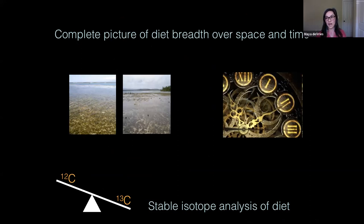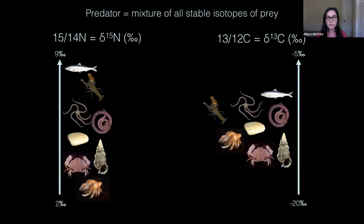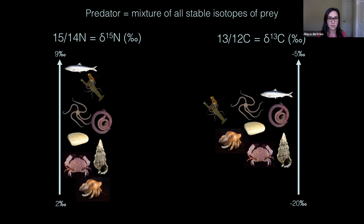Now we had an idea of what they're capable of eating in the lab. We wanted to know what they're eating in the field. To get a complete picture of diet breadth over space and time, we used stable isotope analysis. When you think about stable isotopes, you can think about the predator as a mixture of all of the different stable isotopes of the prey. So you can look at predator muscle tissue and get an idea of what they're eating, because organisms have integrated the stable isotope values of their prey — you can use this to understand who eats whom in an ecosystem.